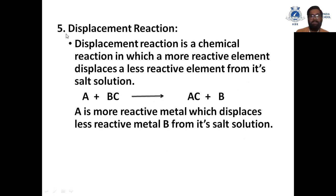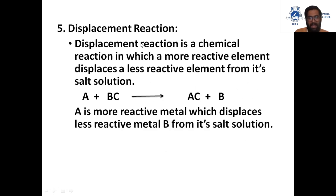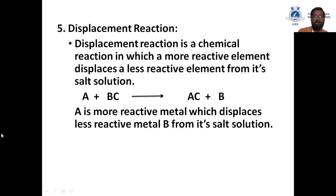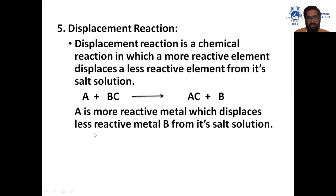Now the fifth one is displacement reaction. A displacement reaction is a chemical reaction in which a more reactive element displaces a less reactive element from its salt solution. Metal A, being more reactive, displaces the less reactive metal from its salt solution.